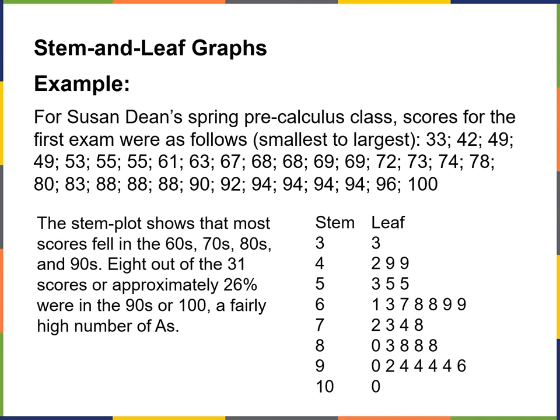Looking at this stem plot, you can see that most of the scores fell in the 60s, 70s, 80s, and 90s. Eight out of the 31 scores — approximately 26% — were in the 90s or 100, a fairly high number of A's. Again, it's just an example to show you how to read the stem plot.